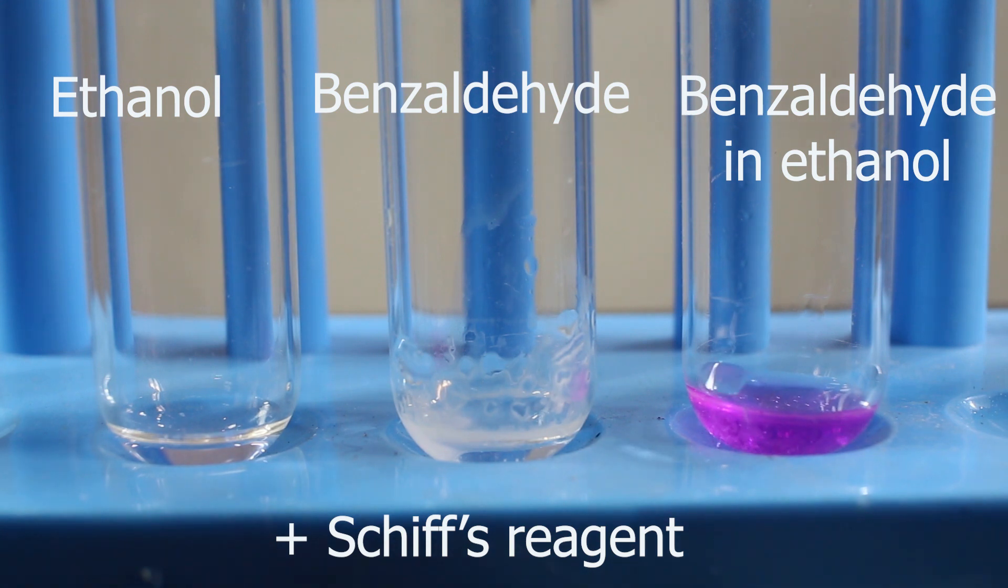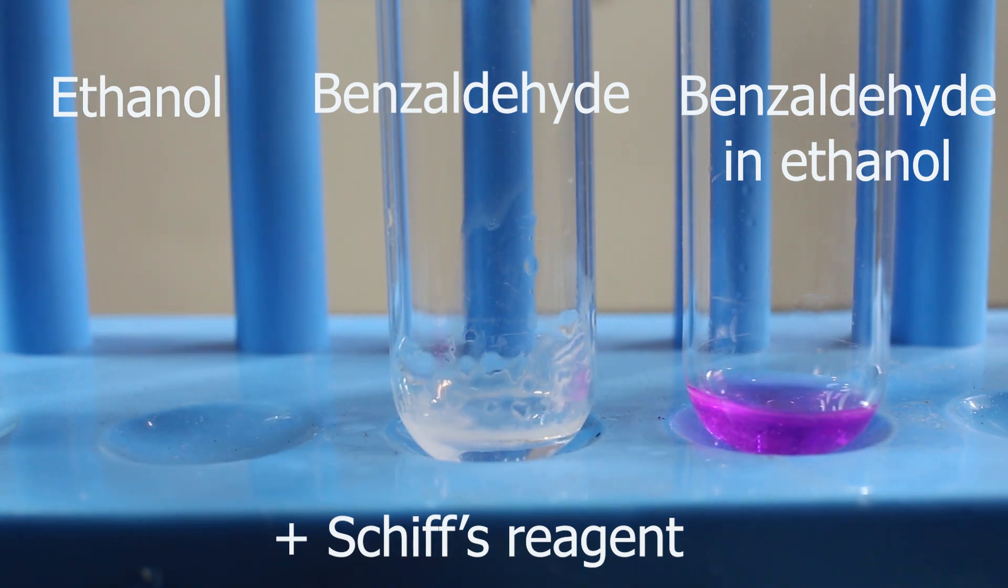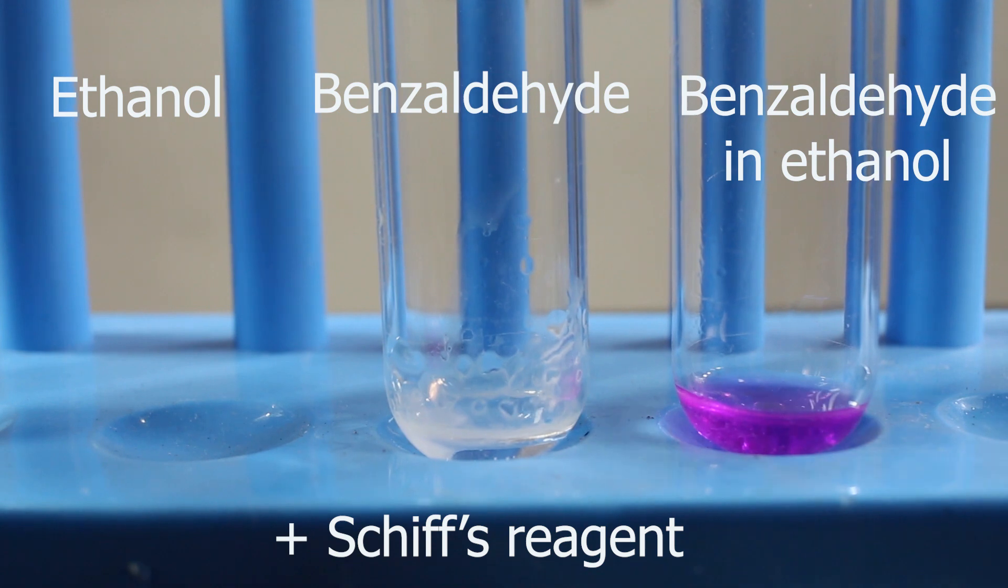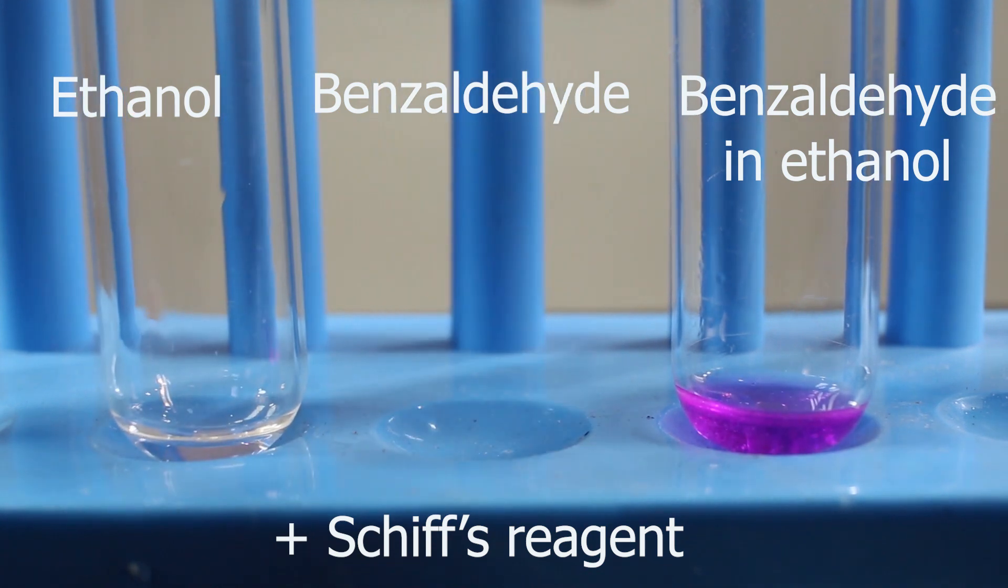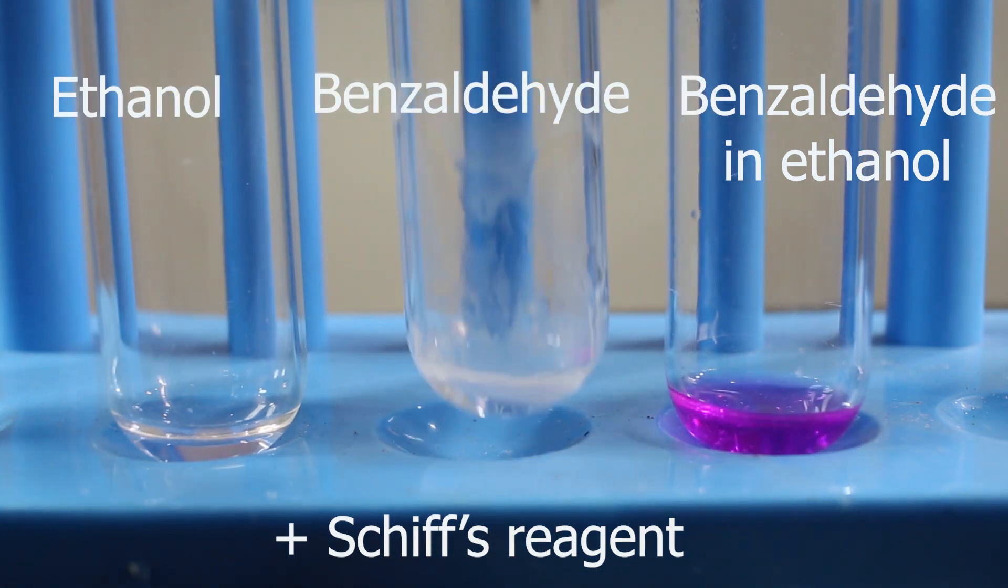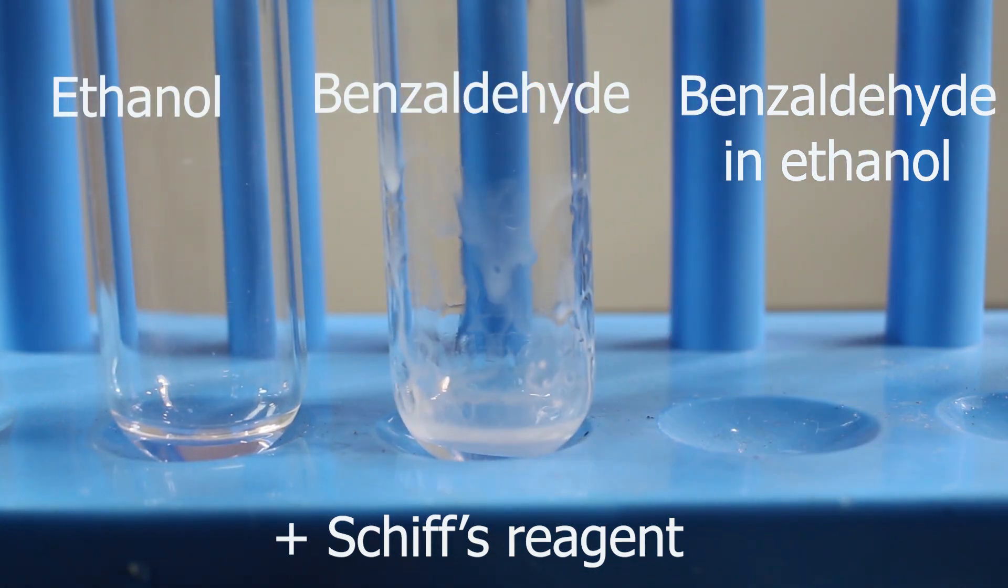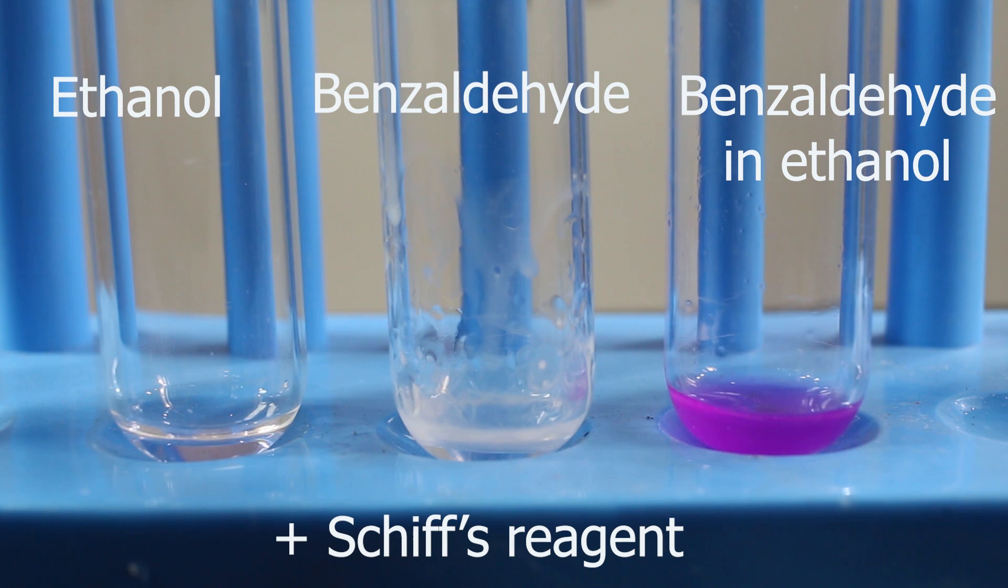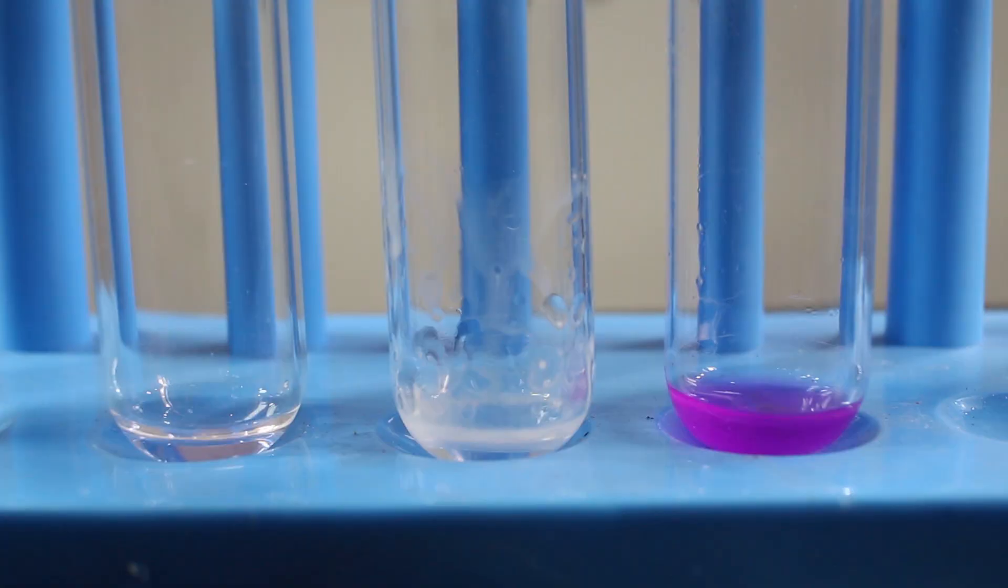Well ethanol with non-aldehyde gives negative result. Benzaldehyde is insoluble in water, so it cannot reach Schiff's reagent. But with the help of ethanol, reaction takes place. That's how you do the test for insoluble aldehydes, help them to be dissolved in ethanol.